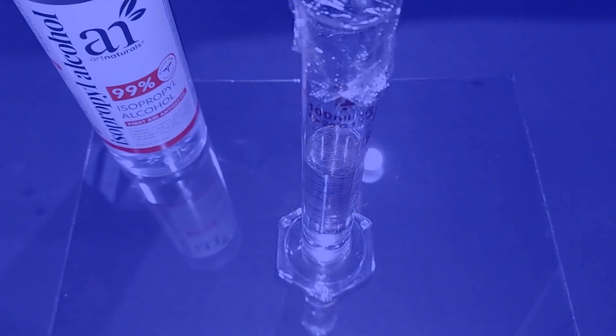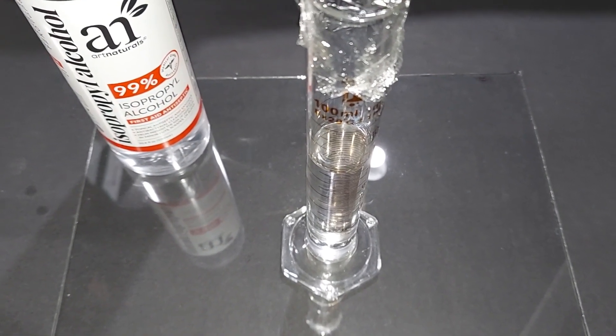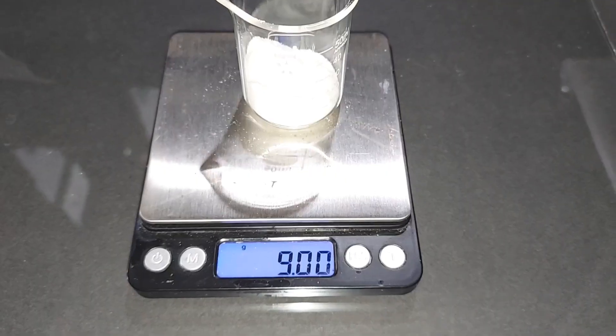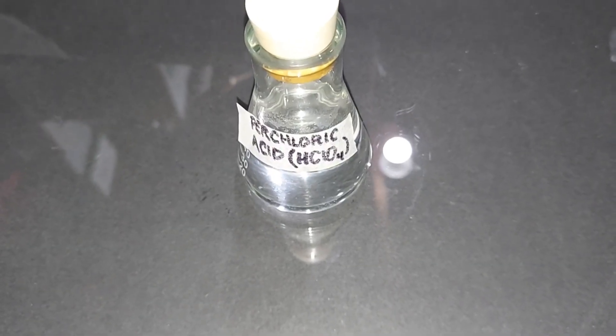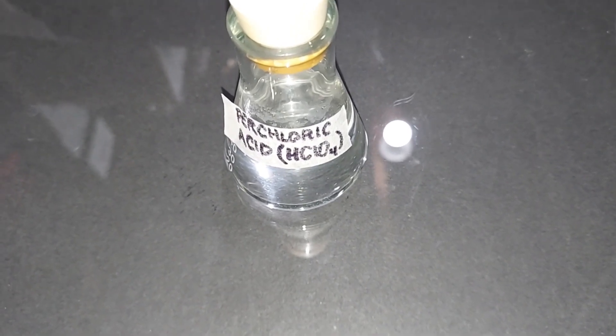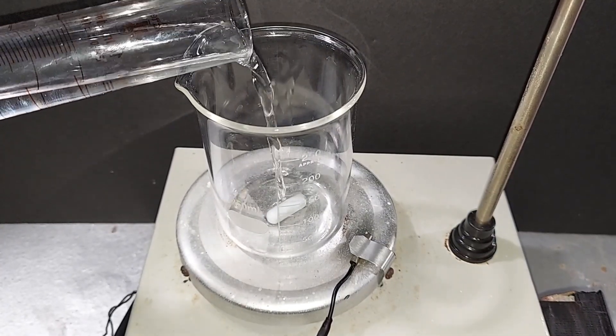76 milliliters of 99% isopropyl alcohol pre-measured, 11 milliliters of distilled water pre-measured, 9 grams of powdered hexamine pre-weighed. This is the perchloric acid made in a previous video and I will be removing 5.2 milliliters when it's time. I'm adding the 76 milliliters of 99% isopropyl alcohol.